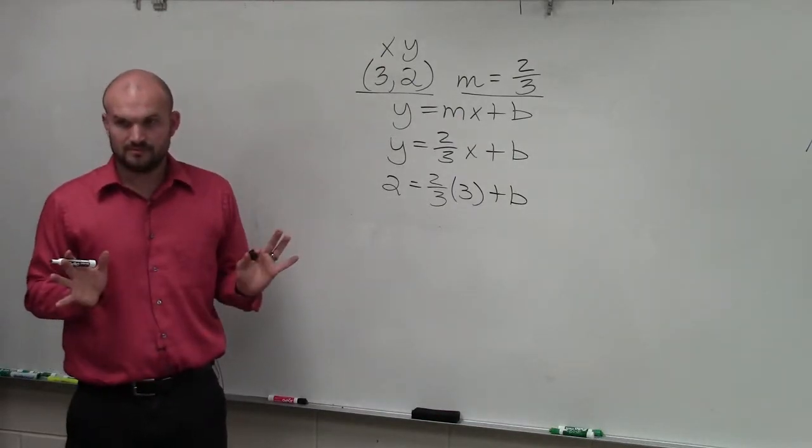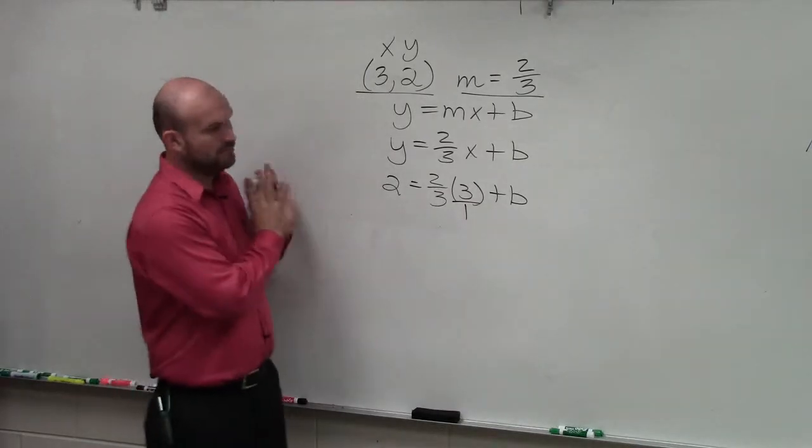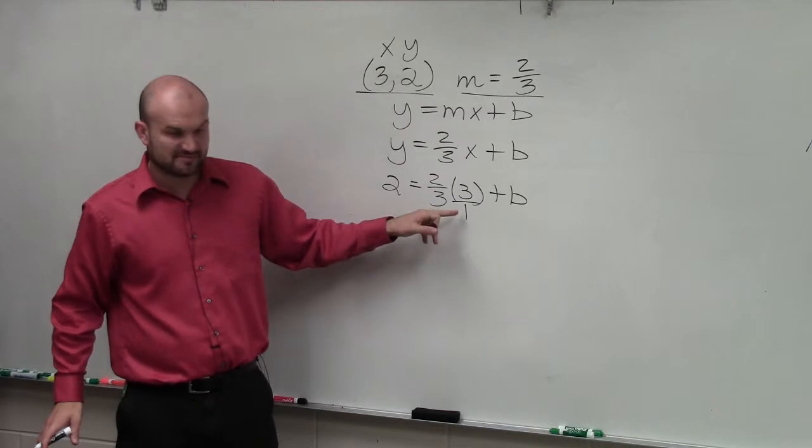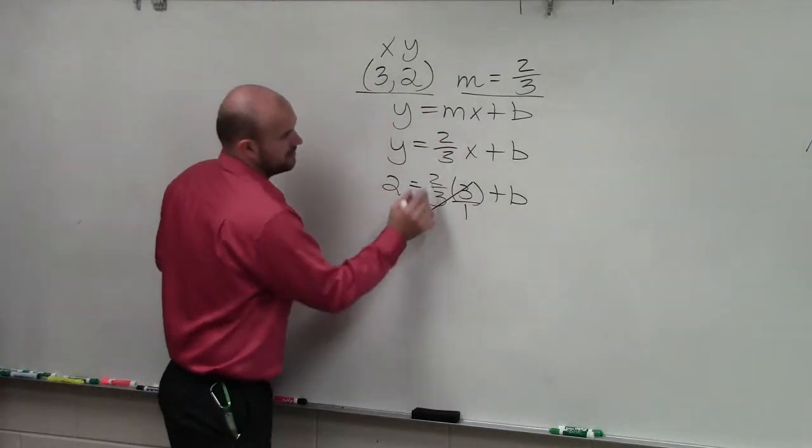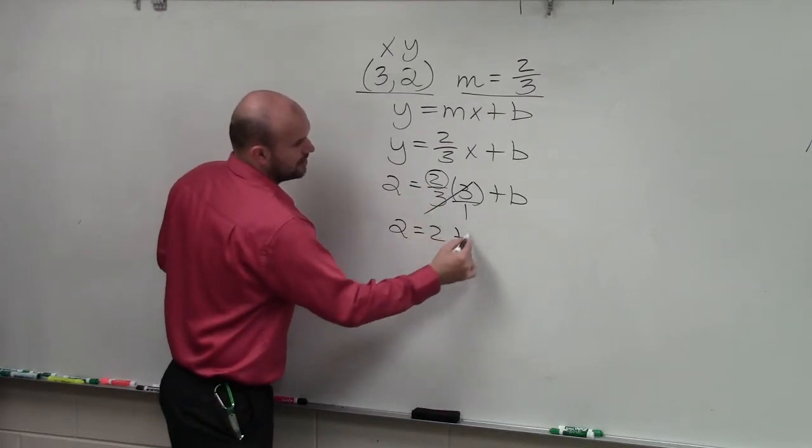See what I did? Now, remember, that's really 3 over 1. So when you multiply fractions, you multiply straight across. 2 times 3 is 6. 3 times 1 is 3. 6 divided by 3 is 2. 2 over 1 is just 2.